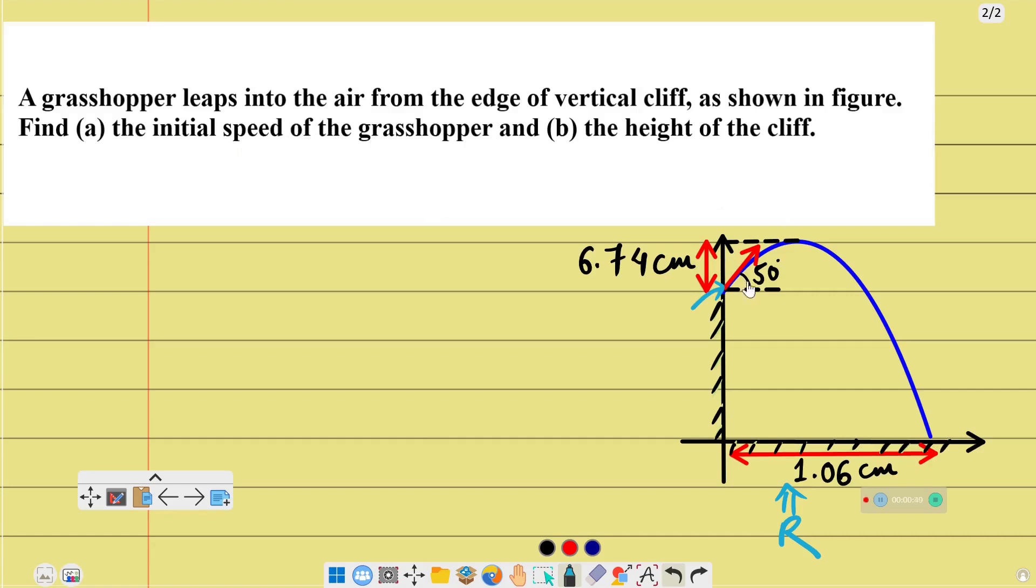And find the height of the cliff. So in this problem, we need to find the initial speed u equals to what, and the height of the cliff h equals to what.